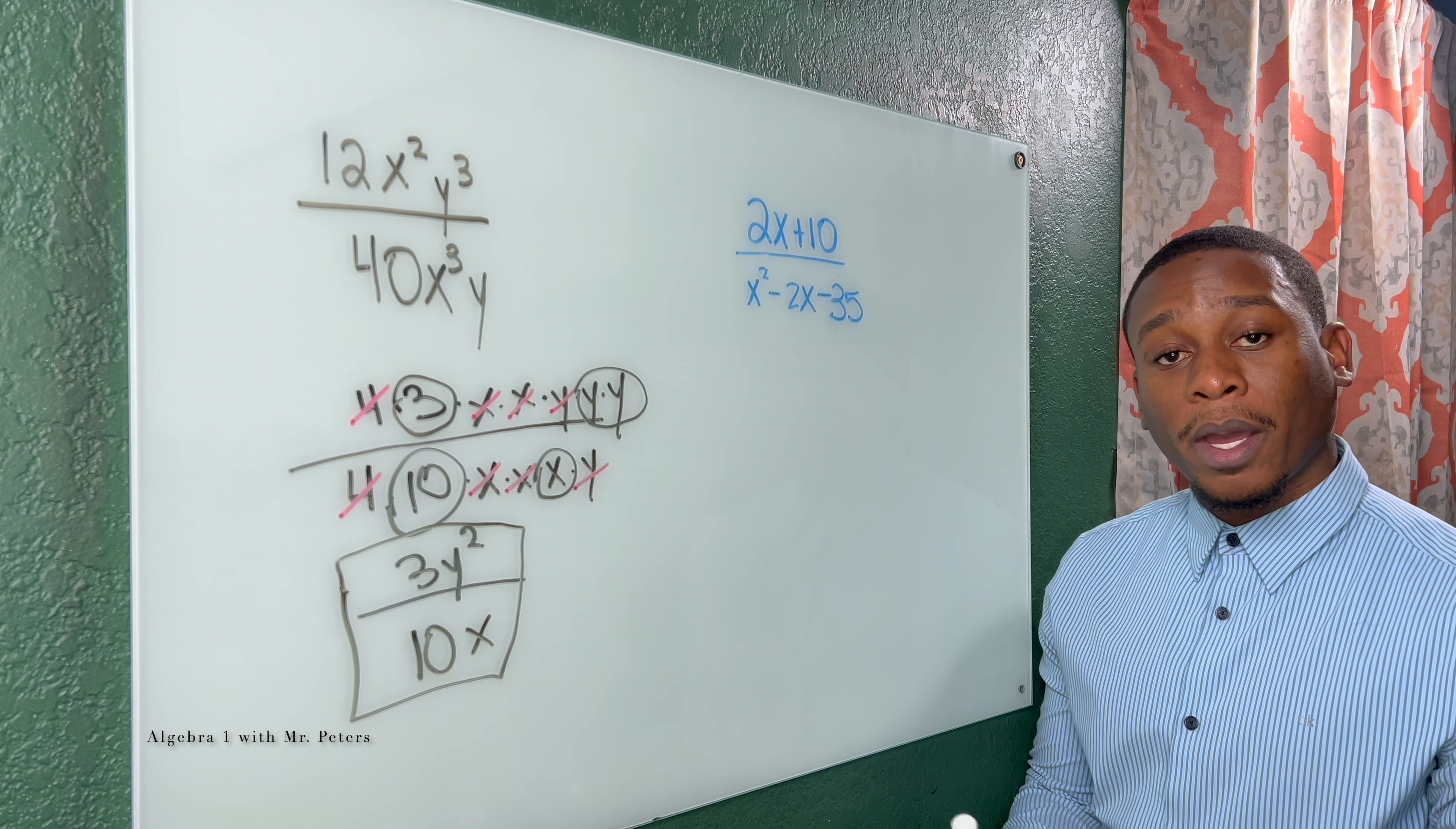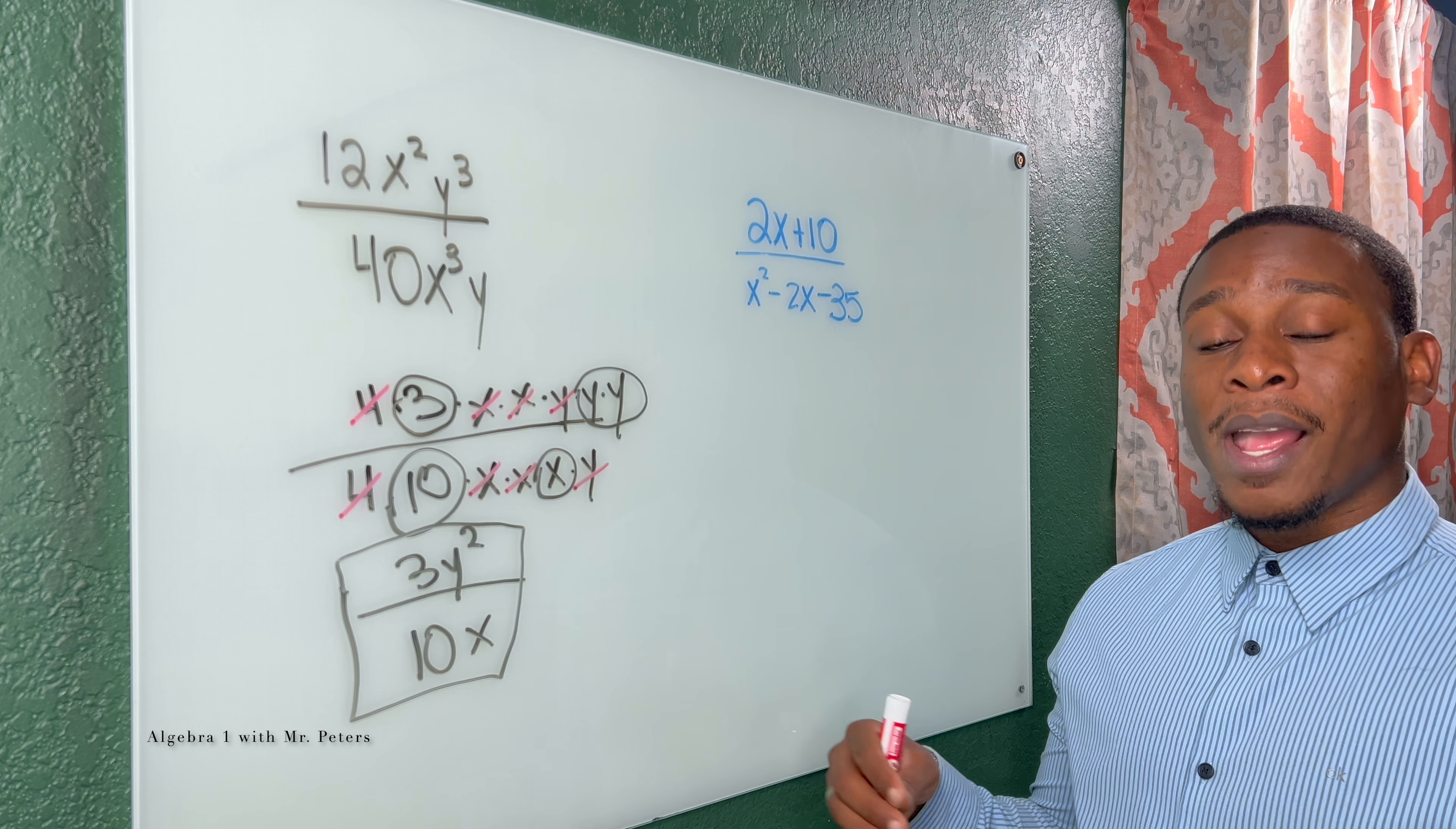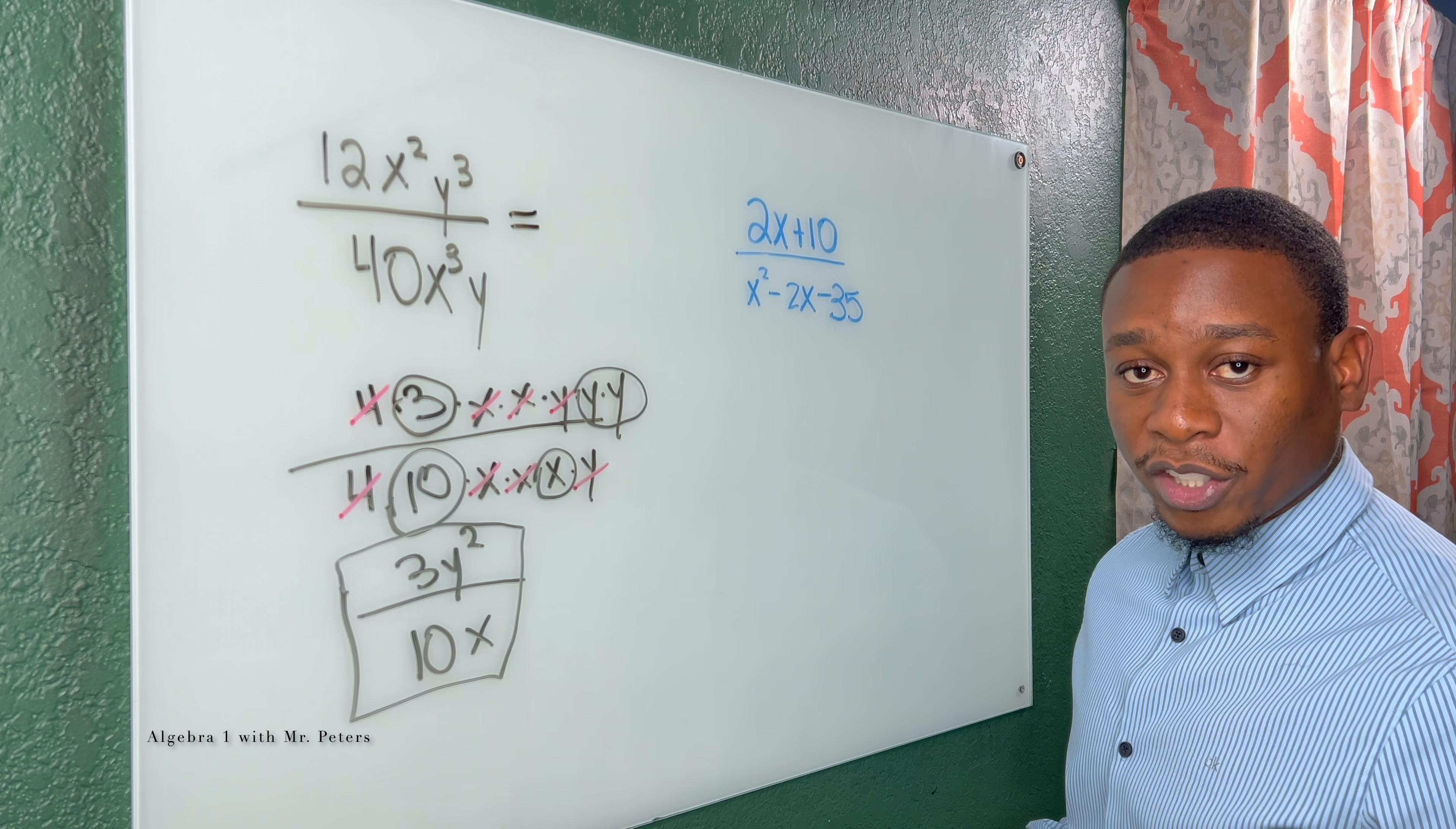Now the only reason why I'm not a big fan of this method is because when the exponents get a little bit higher, it is much harder to write everything out. What we can do, let's go up here, is let's think about this as a fraction.